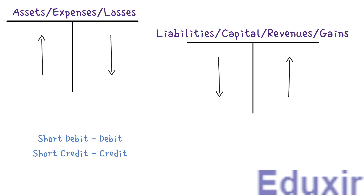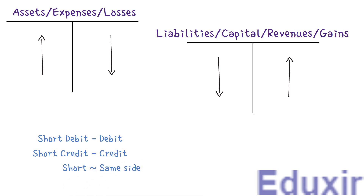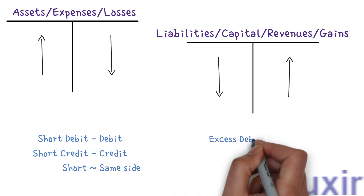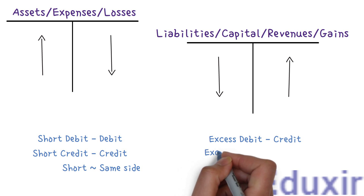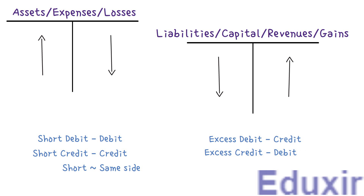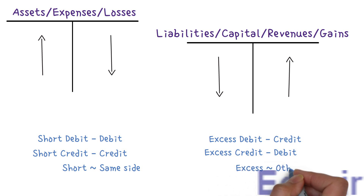If the error is on the debit side, then we should enter the error rectification entry on the same side, that is the debit side. If the error is on the credit side, then we should enter the error rectification entry on the same side, that is the credit side. So remember that whenever there is a short, we enter the rectification entry on the same side. Similarly, if the error is due to excess debit, then we should credit the corresponding account. If the error is due to excess credit, then we should debit the corresponding account. The error rectification entry will be on the other side of the side on which the error is committed. Remember that whenever there is excess, we should enter the rectification entry on the other side.